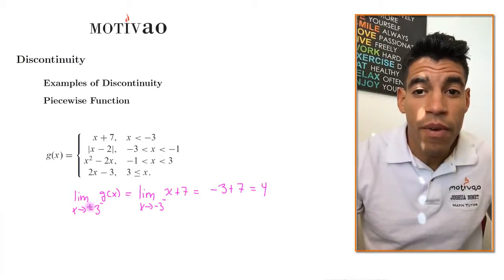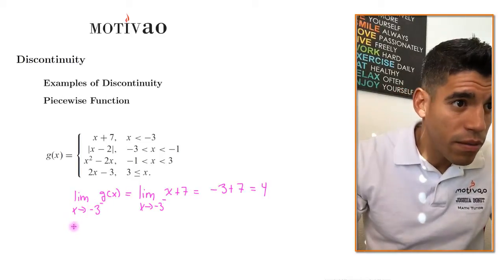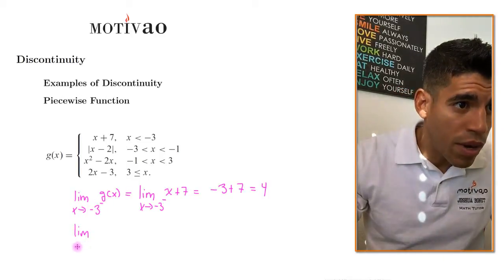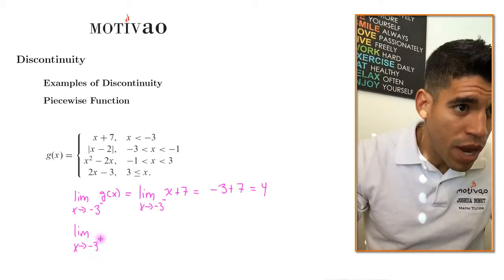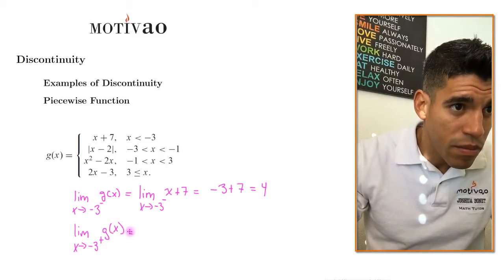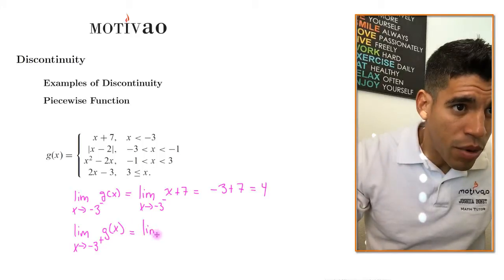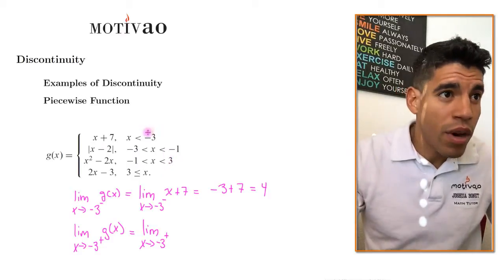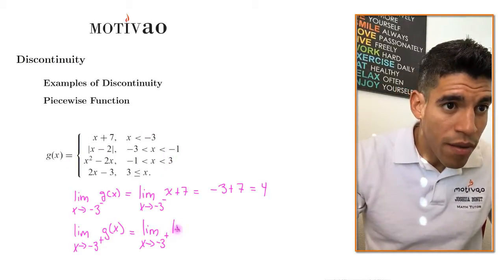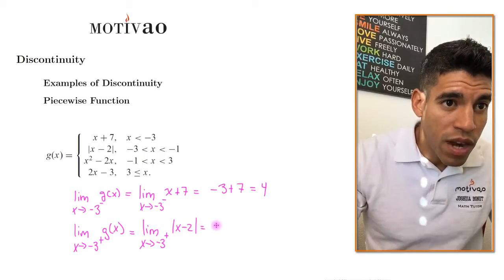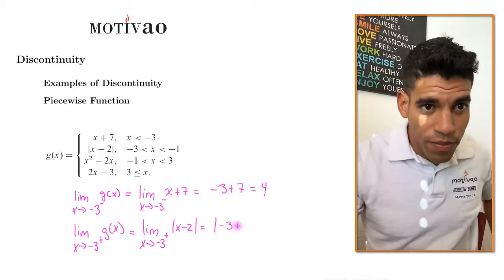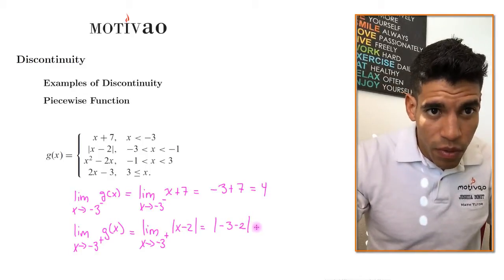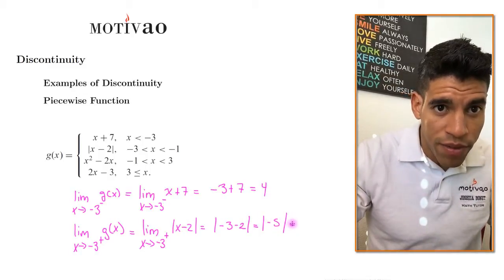Now we have to do the same thing from the right of negative 3. When x approaches negative 3 from the right of g of x, if x is greater than negative 3, we're going to choose absolute value of x minus 2, which is the absolute value of negative 3 minus 2, which is the absolute value of negative 5, which is 5.